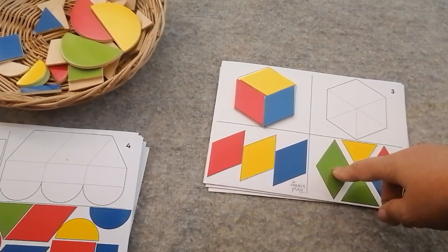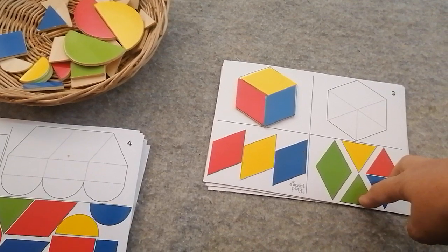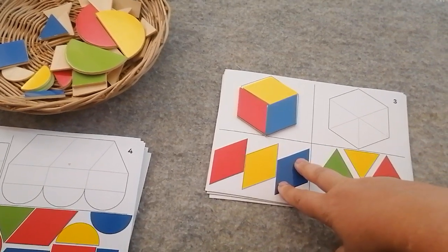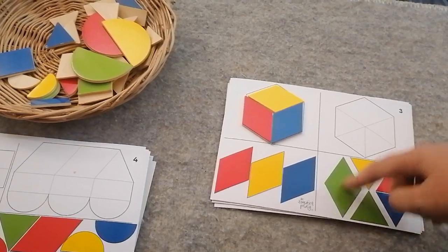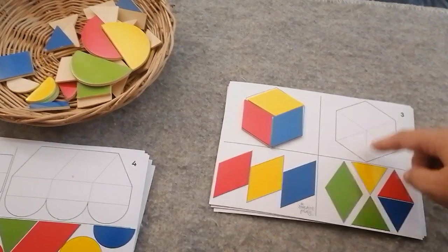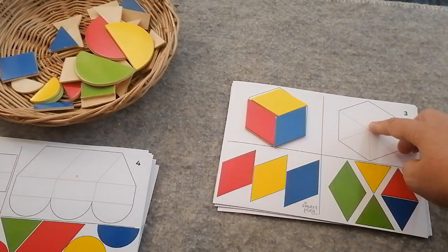But because two triangles are the same as one diamond, I could also put these four triangles and the diamond together, or six triangles together, and I could also make a hexagon.